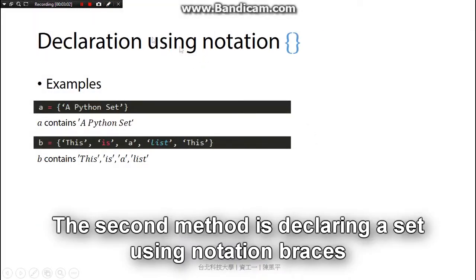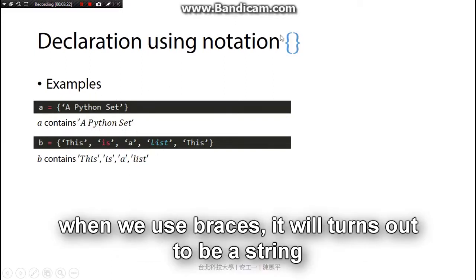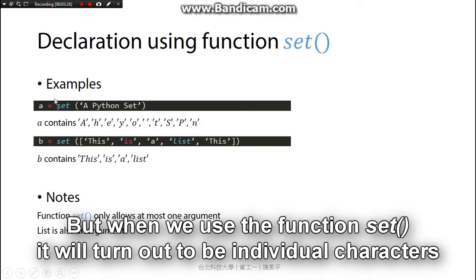The second method is declaring a set using notation braces. A special point here is when we use braces, it will turn out to be a string, but when we use the function set, it turns out to be individual characters.